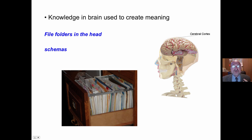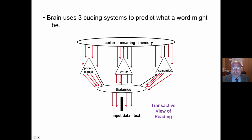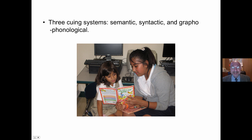Cognitive psychology calls these schemas or schemata — which are like file folders in the head, organized around particular bodies of knowledge or concepts. The brain uses three cueing systems to recognize words in print, along with this stored knowledge: the phonological, the syntactical, and the semantic. Information on the page goes up to the thalamus, and these three cueing systems are used to create meaning.